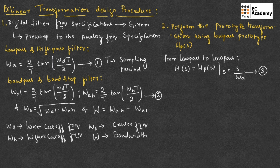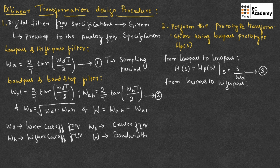If we want to transform from low pass to high pass, then we can use the transformation H(s) = H_P(s), where s should be replaced with omega_A divided by s.